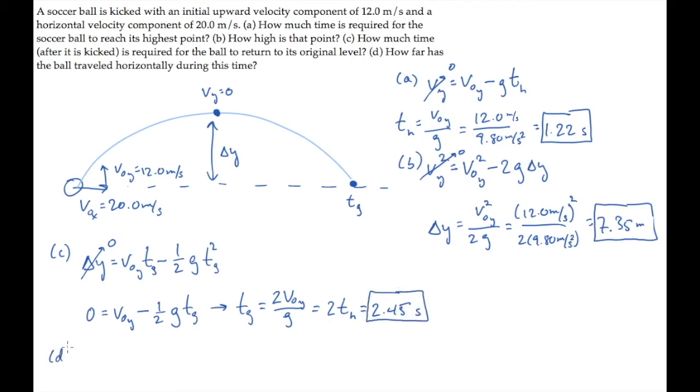Part D asks how far the ball travels horizontally during this time. We'll find that using the horizontal displacement equation. Delta x is v_0x times t. The initial x component of velocity is 20 meters per second, that's constant, and the ball spends 2.45 seconds moving sideways, so it travels 49 meters, the distance shown here.